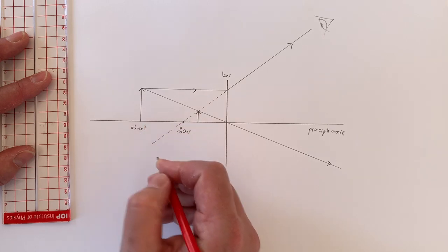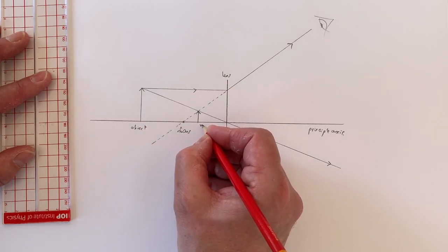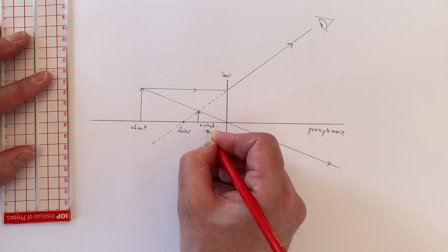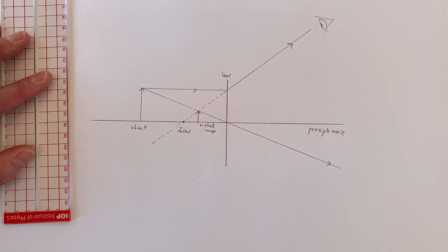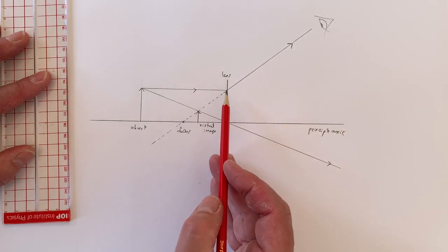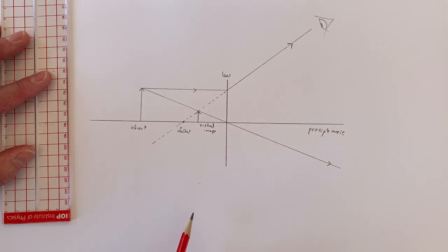This image is not a real image, it's what we call a virtual image because it is formed by the divergence of the rays away from that point. And this ray doesn't actually travel through that point and hence if you put a piece of paper there, you wouldn't actually see an image on the piece of paper.